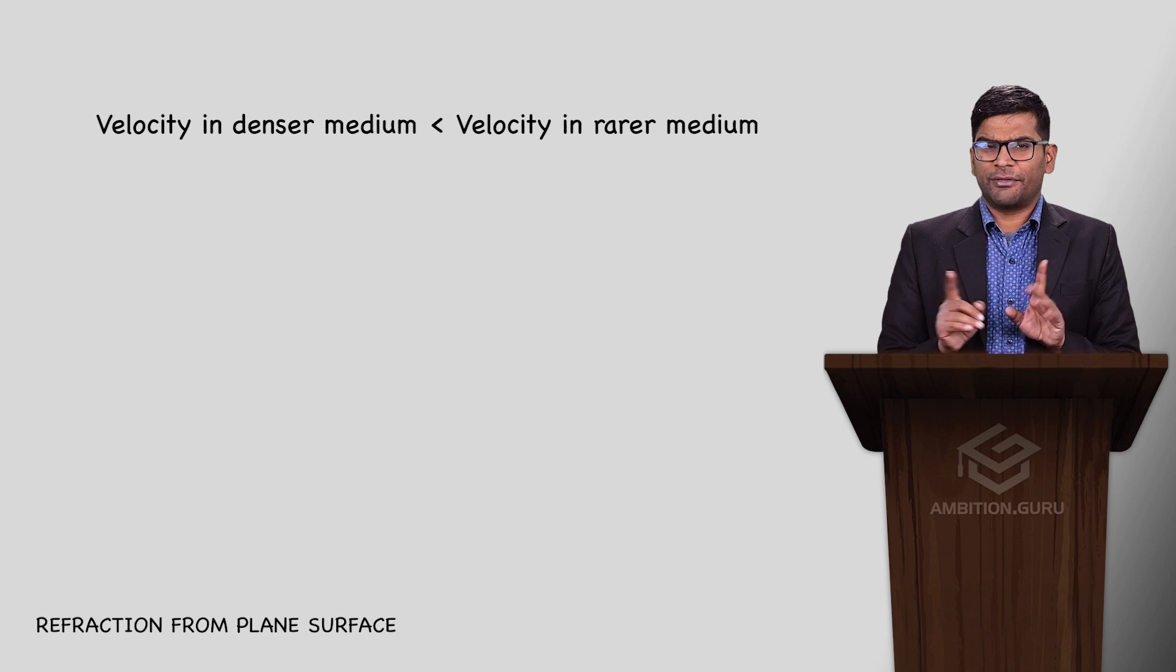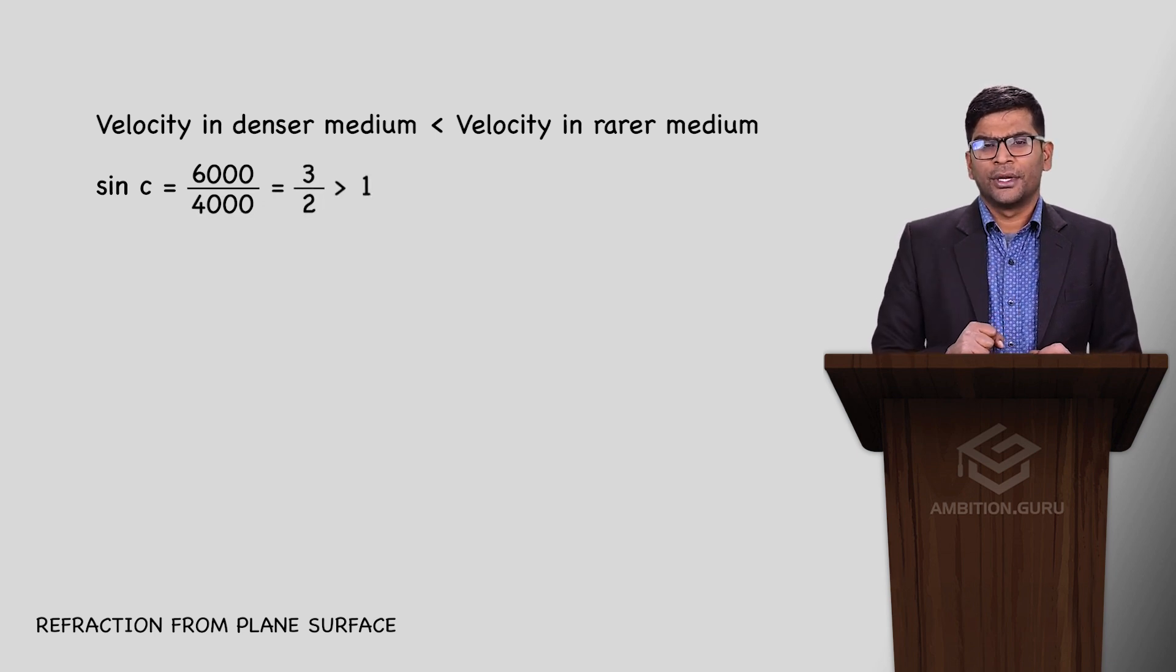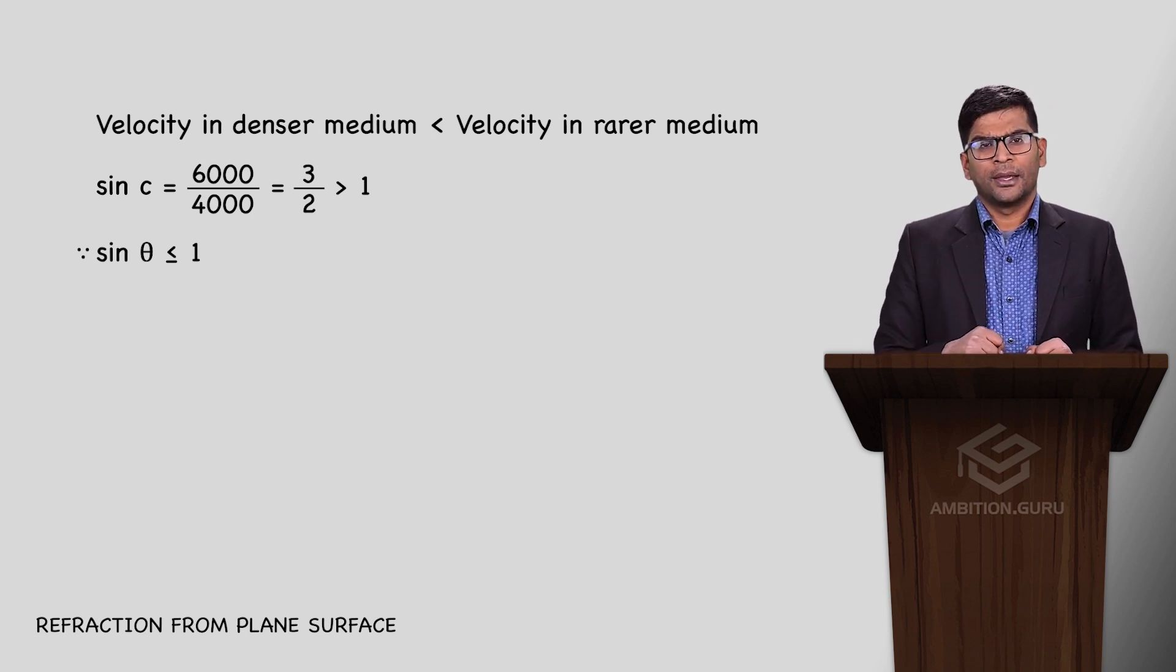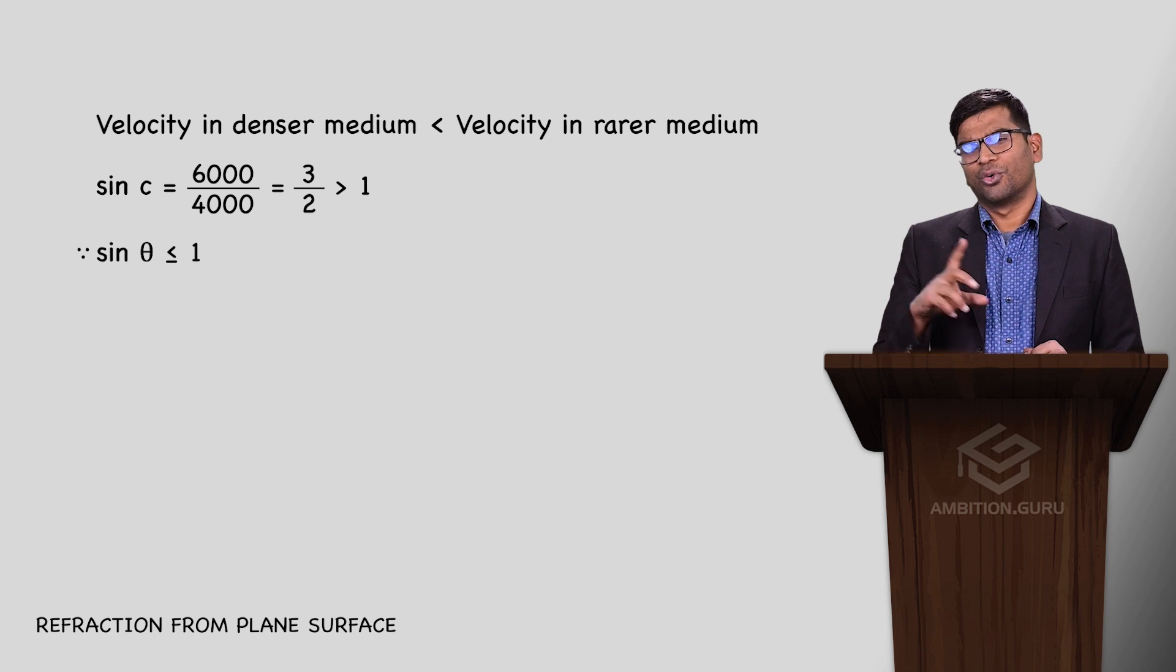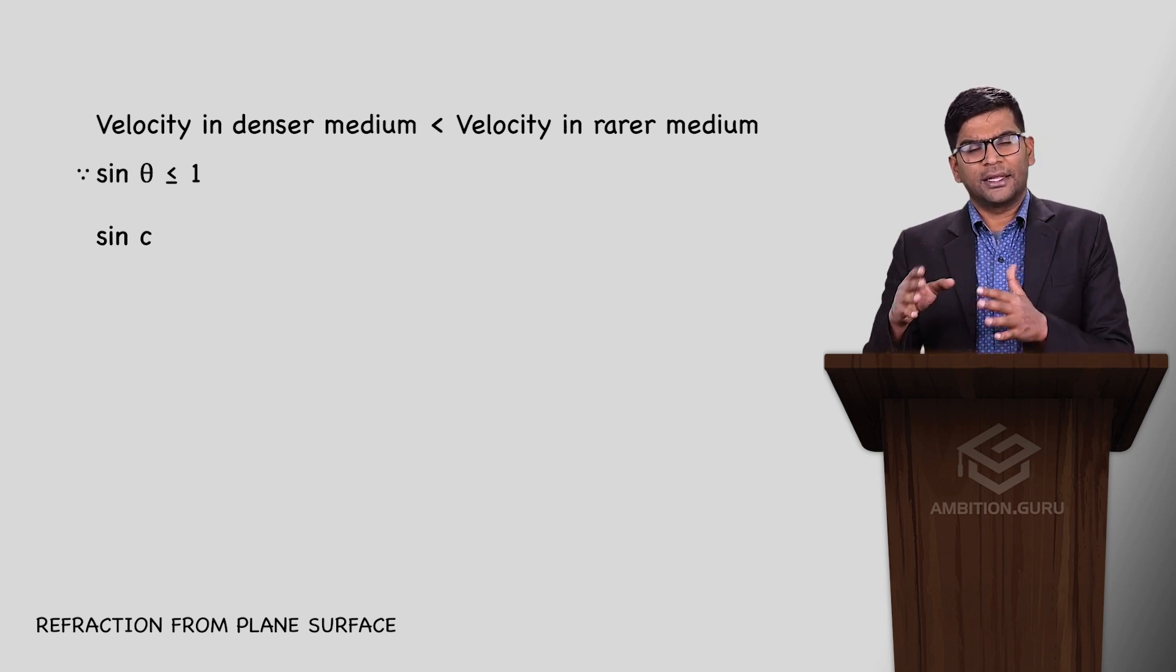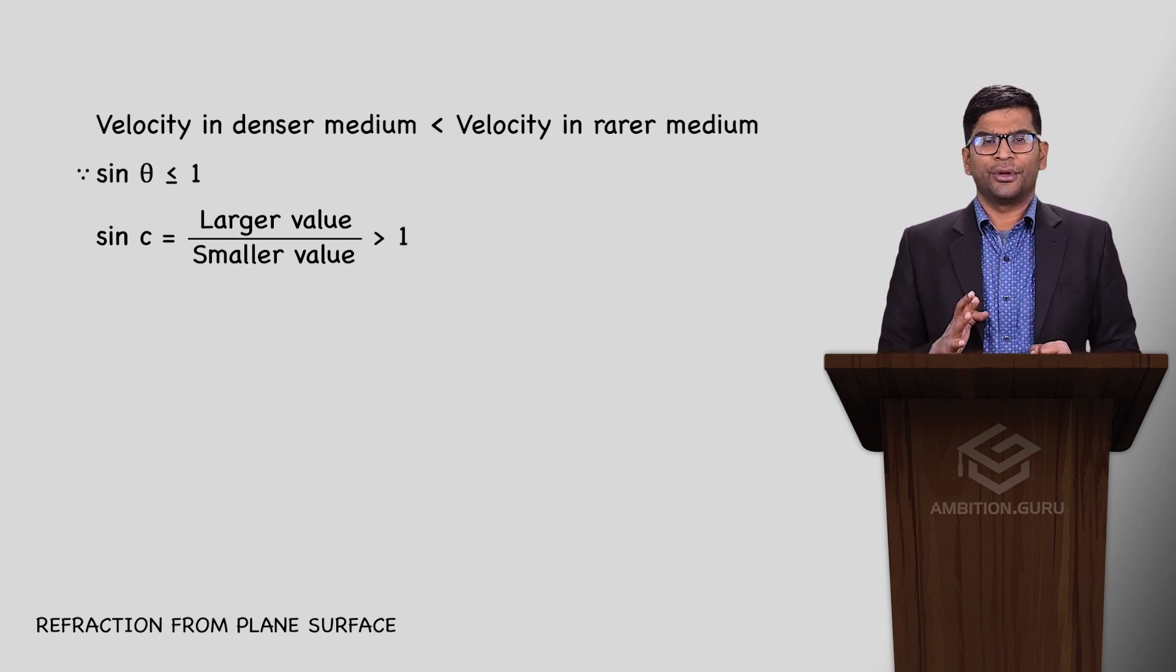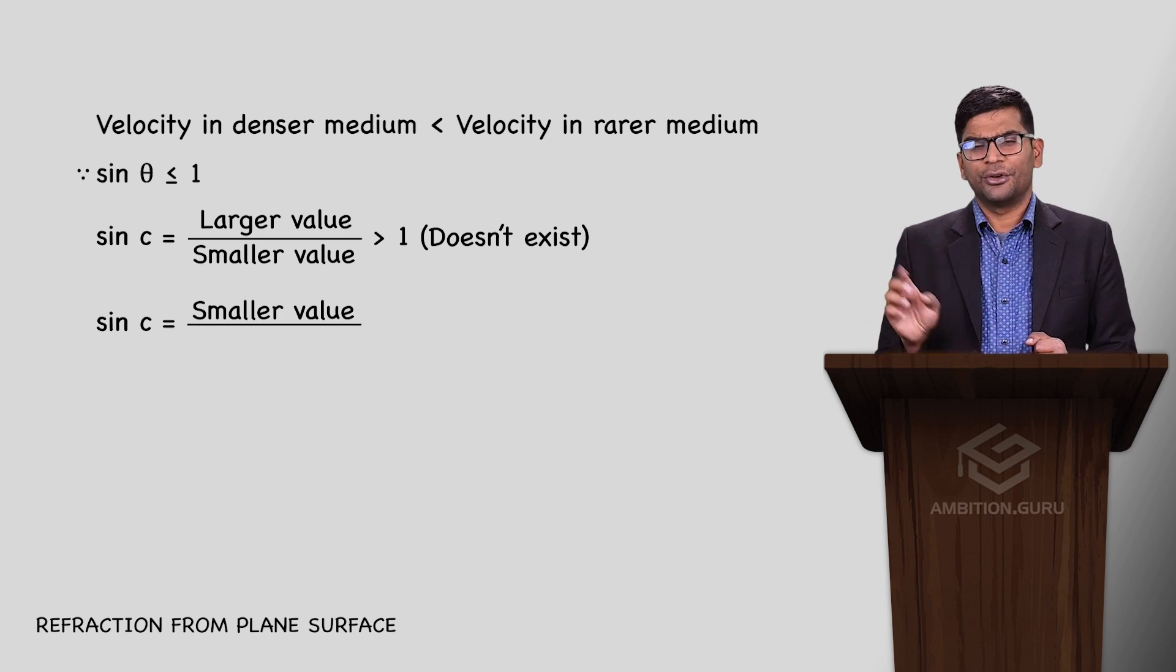What if we don't know the formula? Which should we put on top? If we put sin c equals 6000 angstrom upon 4000 angstrom, we get 3 by 2. But sine of any angle cannot exceed 1. Since sine can't be greater than one, this is impossible. Whether velocity, wavelength, or μ is given, sin c equals the smaller value upon the larger value.